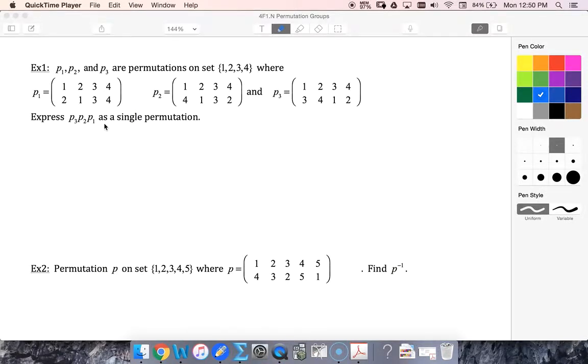All right, in this one we're looking at some examples. So we've got composition of permutations. We want to express the composition of p3, p2, and p1 as a single permutation.